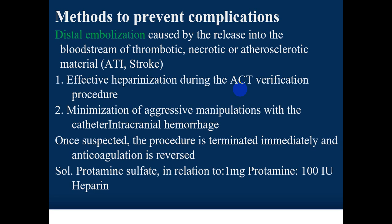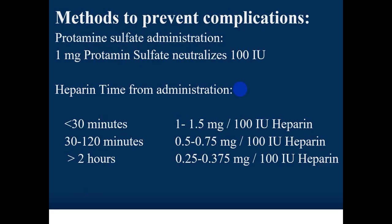Protamine sulfate dosing: 1 mg per 100 units of heparin. For example, if intracranial hemorrhage is detected five minutes after administering 5,000 units of heparin, you would require 50 mg of protamine sulfate. If hemorrhage is detected after one hour — accounting for heparin's half-life — approximately 25 mg or slightly more of protamine sulfate would be required.